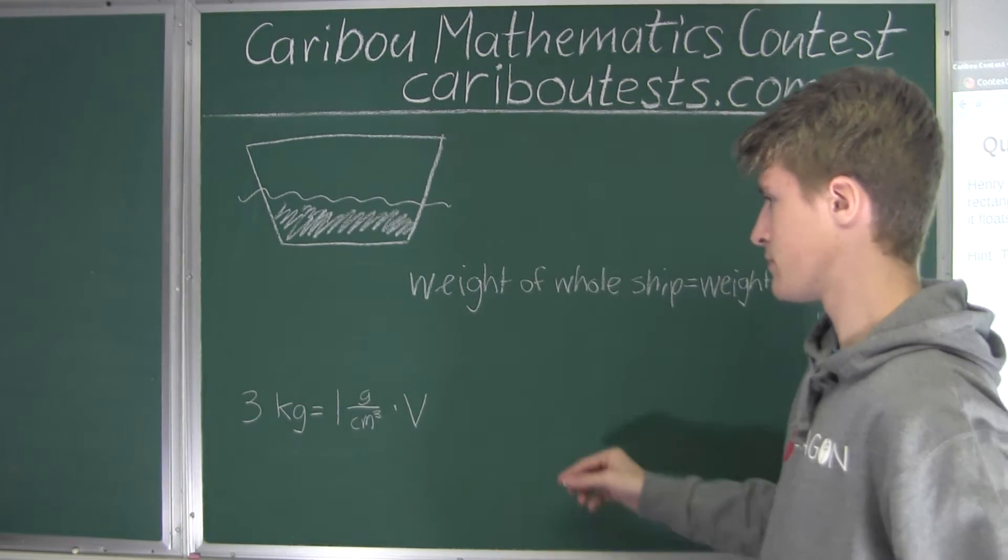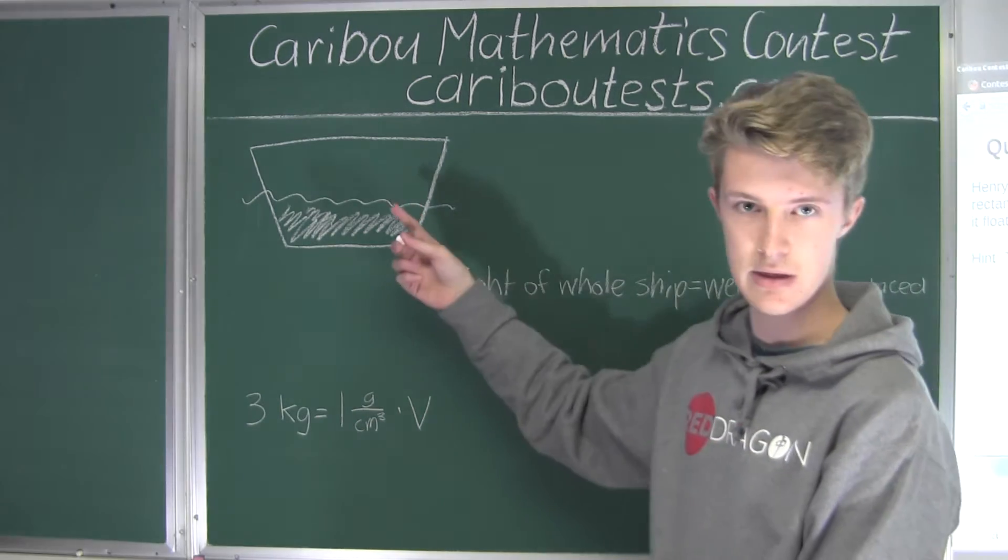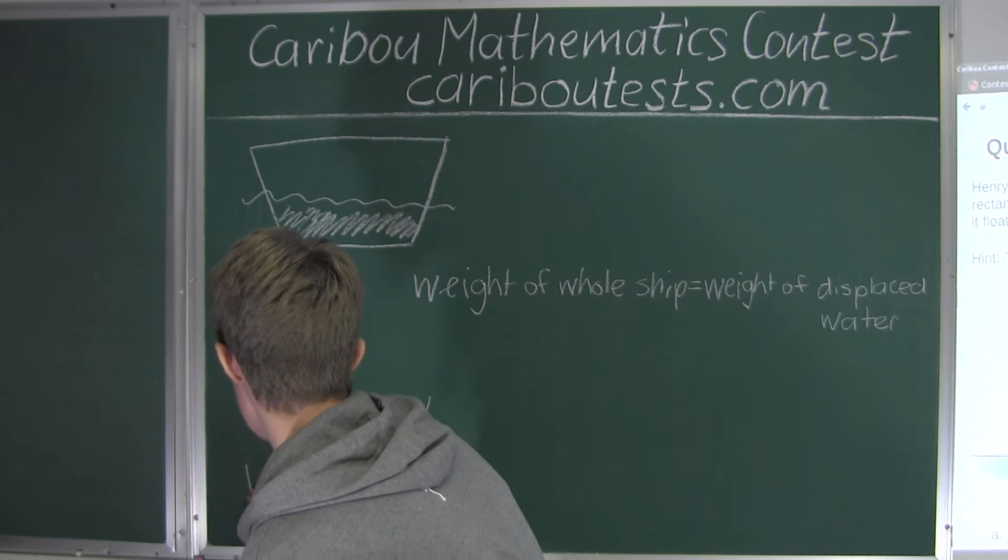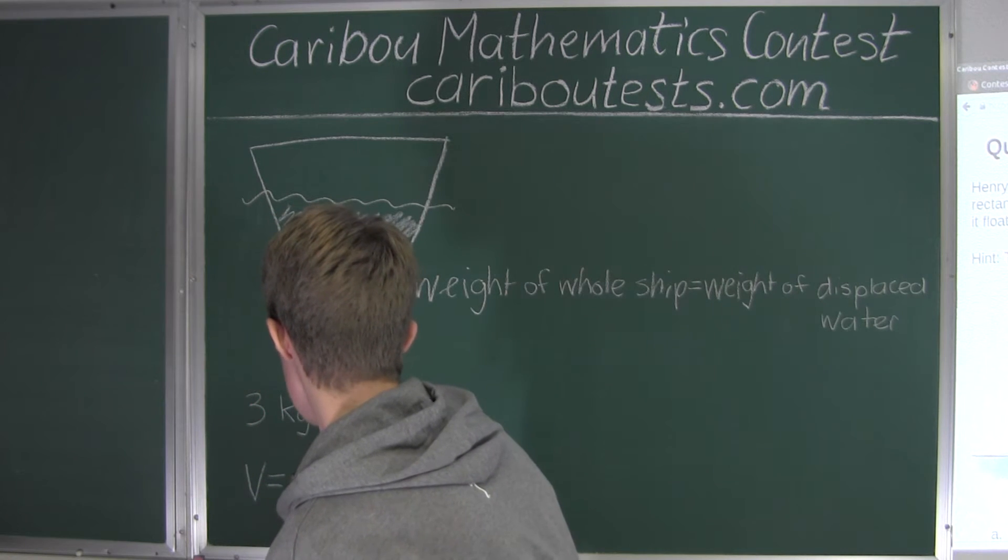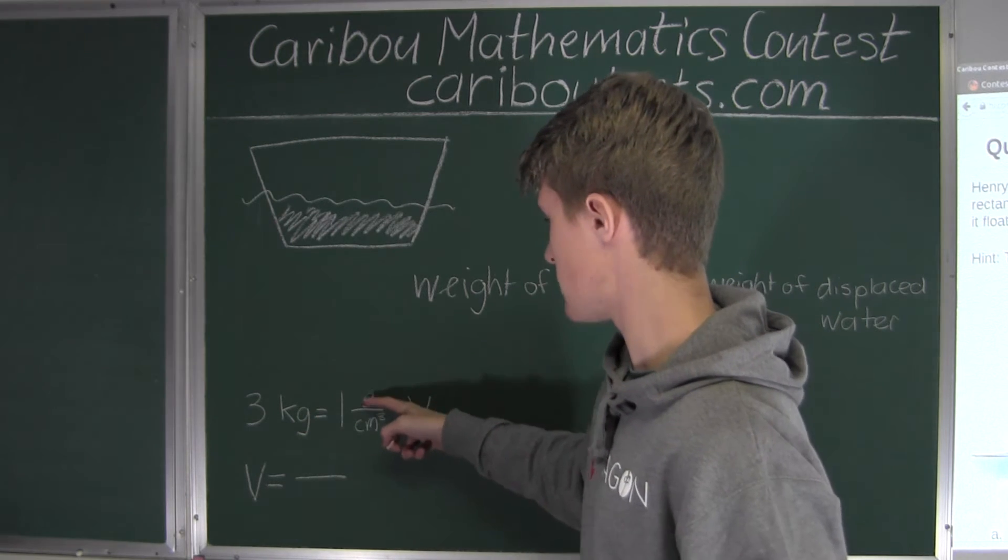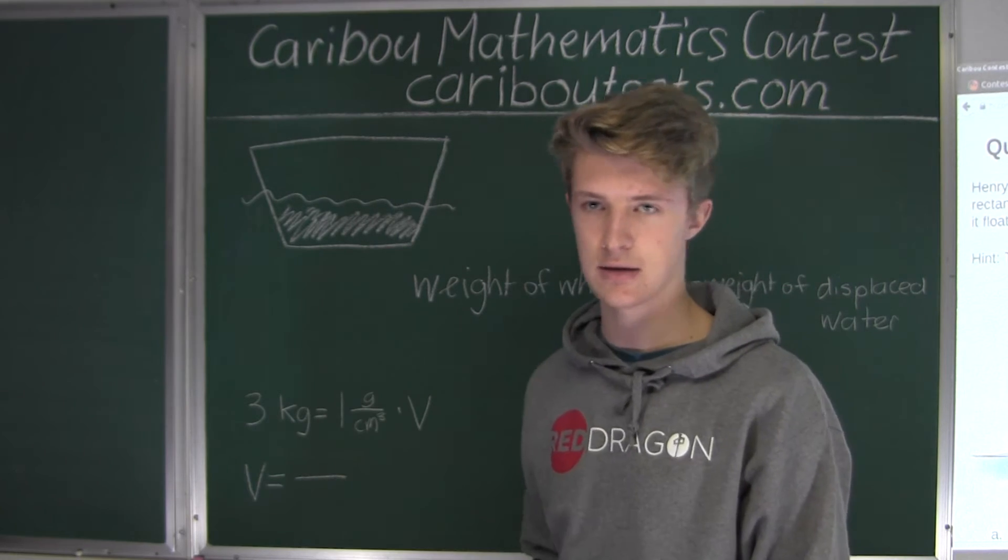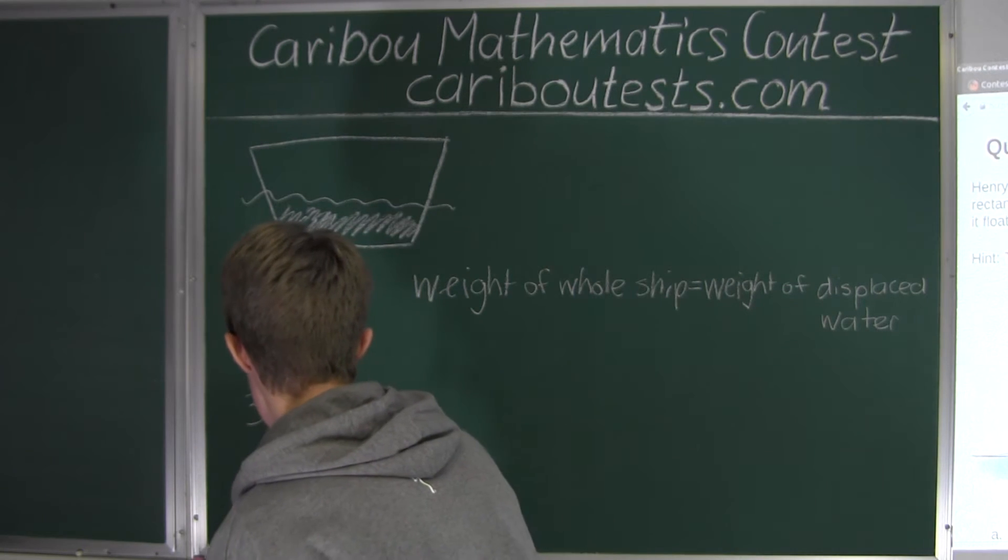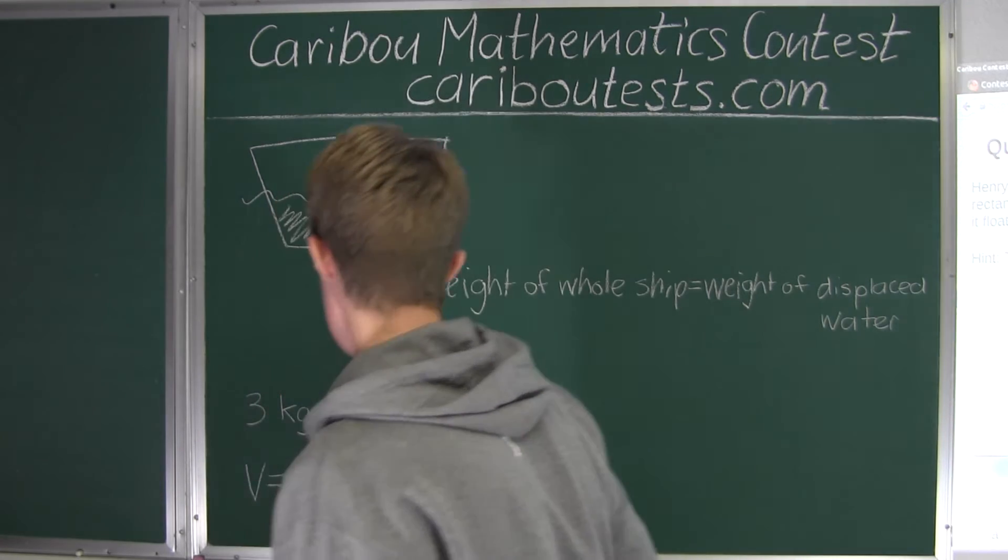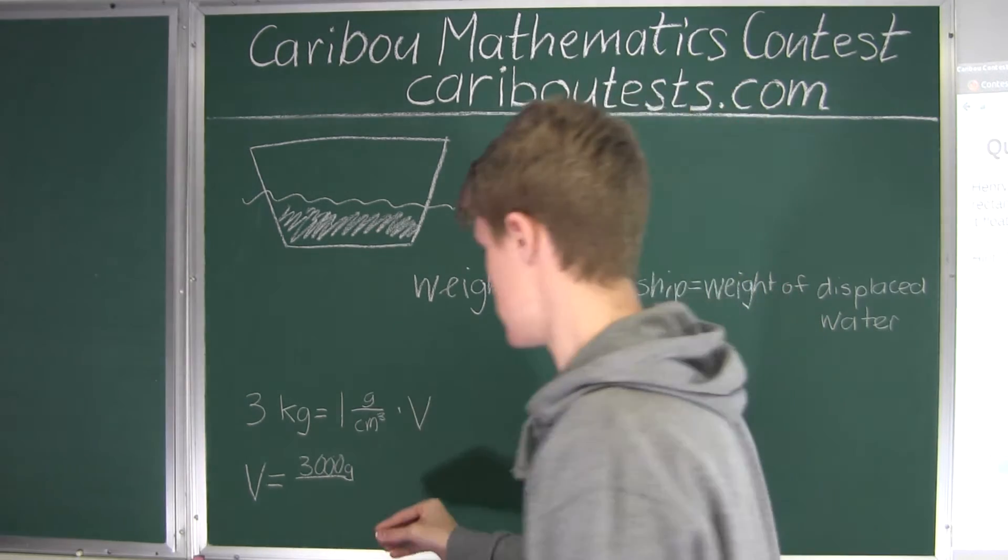So now we just want to find the volume of this displaced water. We have V equals, and then we have three kilograms, so we must divide this on both sides. Three kilograms, since we want it in grams, that's 3,000 grams.